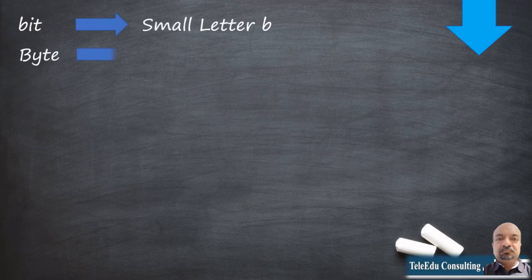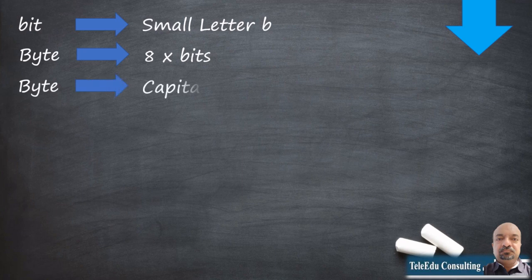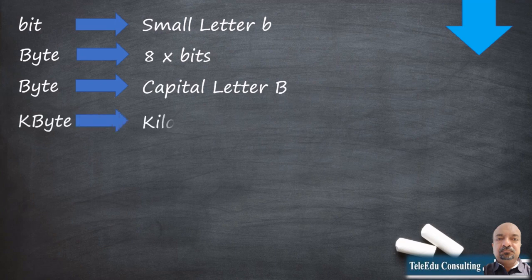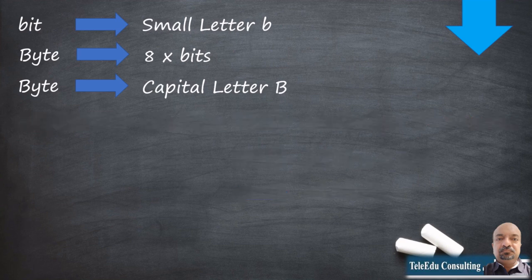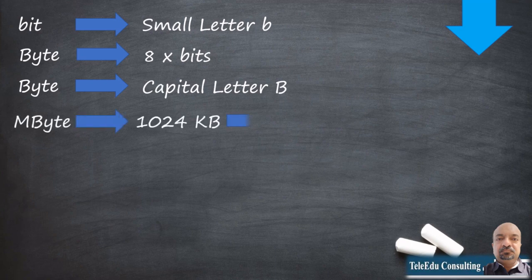A bit is generally represented by the small letter 'b'. A combination of 8 bits is called a byte, mostly written as capital letter 'B'. When there are huge numbers of bits, we use prefixes like kilo, mega, giga, etc., to make it reasonably easy to write and manage. Normally kilo means 1000, but in the digital world it is equivalent to 1024, because binary is a base 2 system and 1024 is the nearest to 1000, being base 2 to the power 10. Next is mega, which is 1024 kilo, and giga, which is 1024 mega.